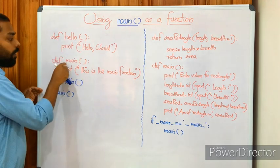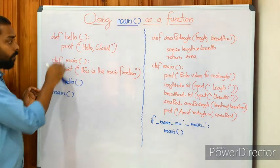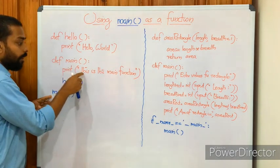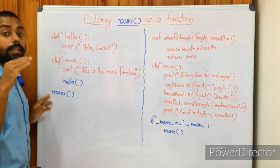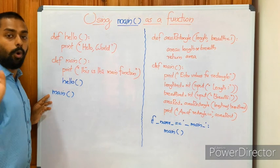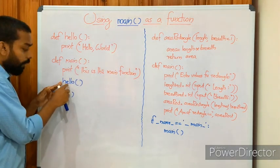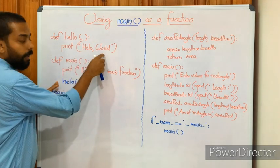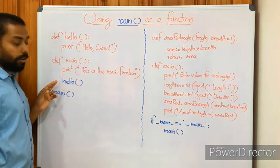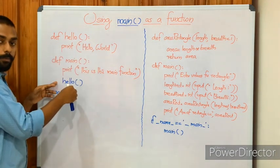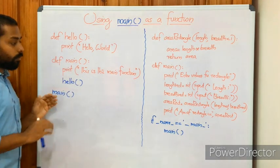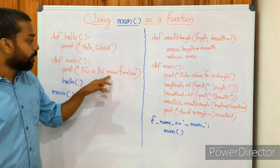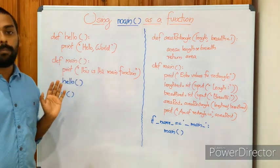As an abstract summary: first we define hello, then main, and then call main. When main is called, control passes to the main function. The first statement 'this is the main function' is printed. Then it moves to the next statement, which is a call to hello. Control passes to hello, hello world is printed, and control returns to main. So the full output is: 'this is the main function' first, then 'hello world'.